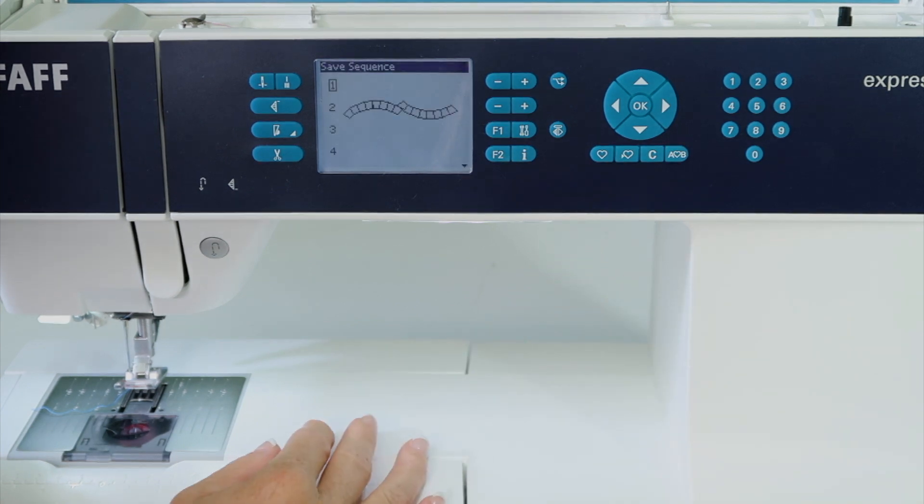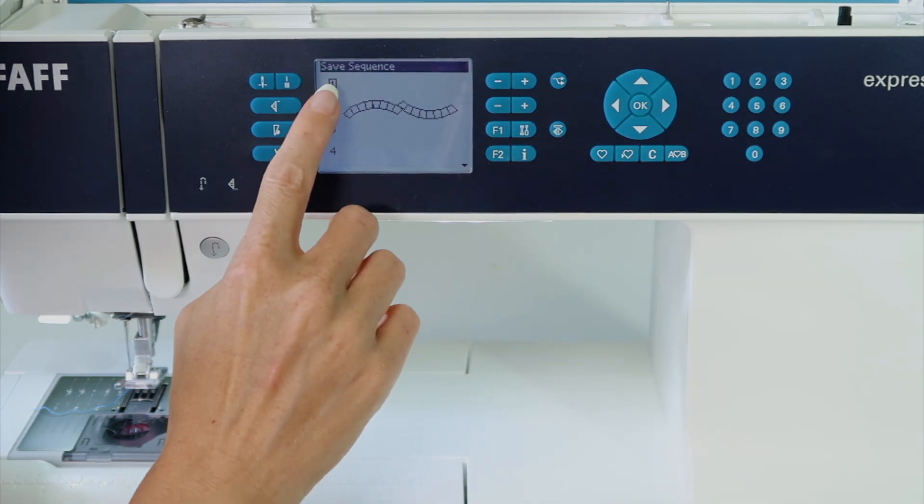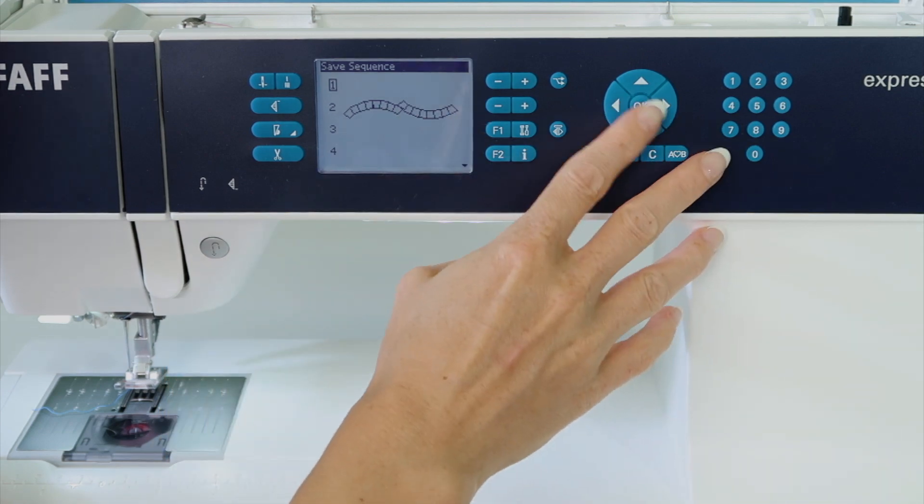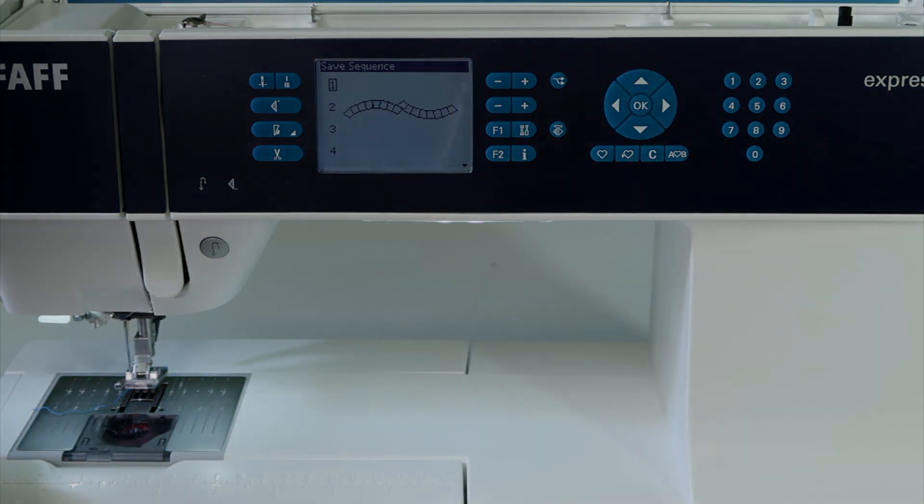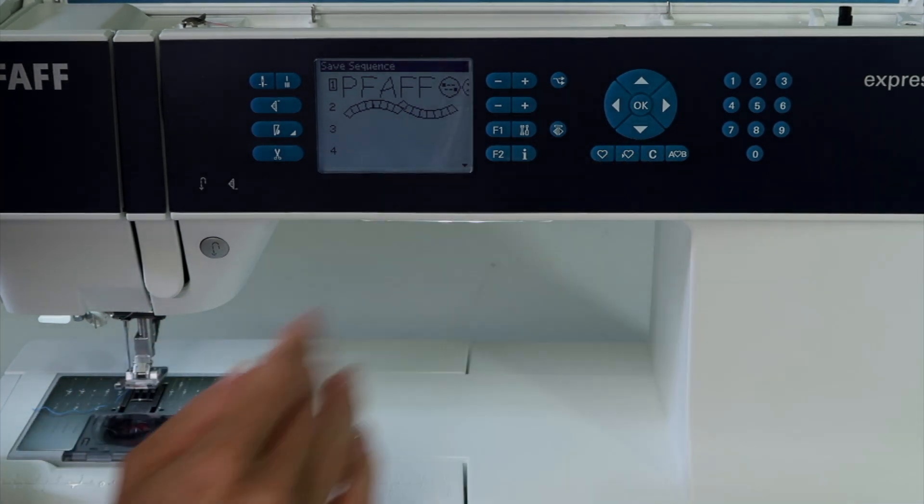Again, if I want to save it, I can go ahead and put it into the memory, save sequence. Since number one is highlighted, and that was where the empty space was, we can touch okay, and it will put the word PFAFF and the features we added into that area.